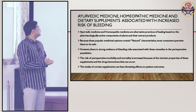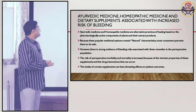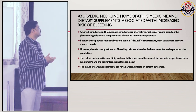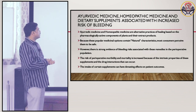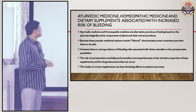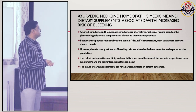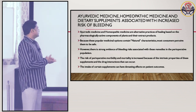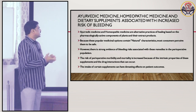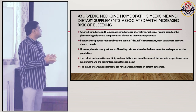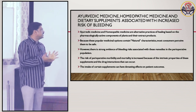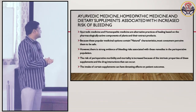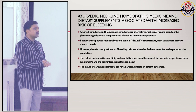Ayurvedic medicine, homeopathic medicine, and dietary supplements are associated with an increased risk of bleeding. These are alternative practices of healing based on pharmacologically active components of plants and their extract products. Though most consumers perceive them as safe due to their natural characteristics, there is strong evidence of bleeding associated with these remedies in the perioperative population. The risk of perioperative morbidity and mortality is increased because of intrinsic properties of these supplements and drug interactions that can occur.